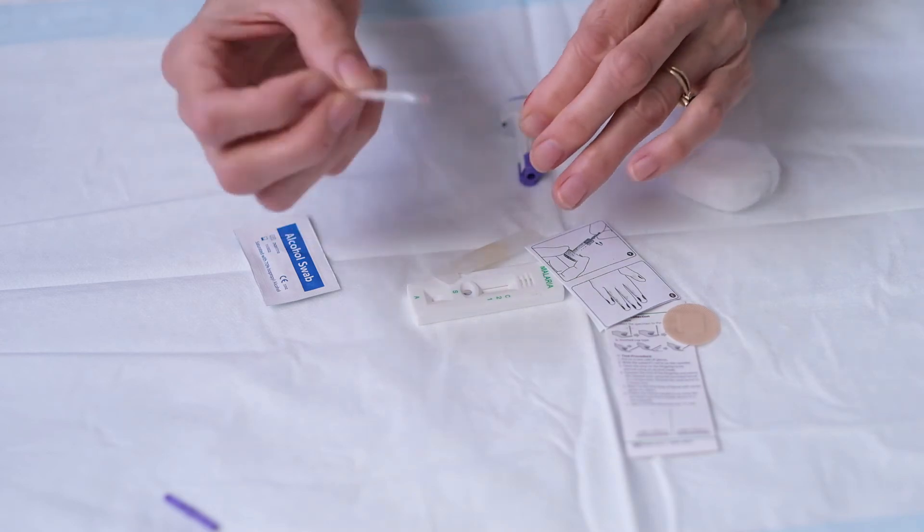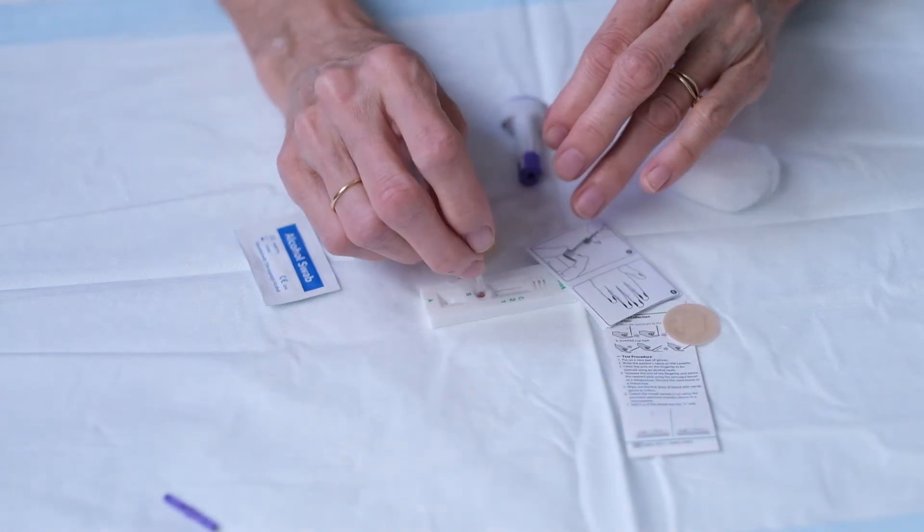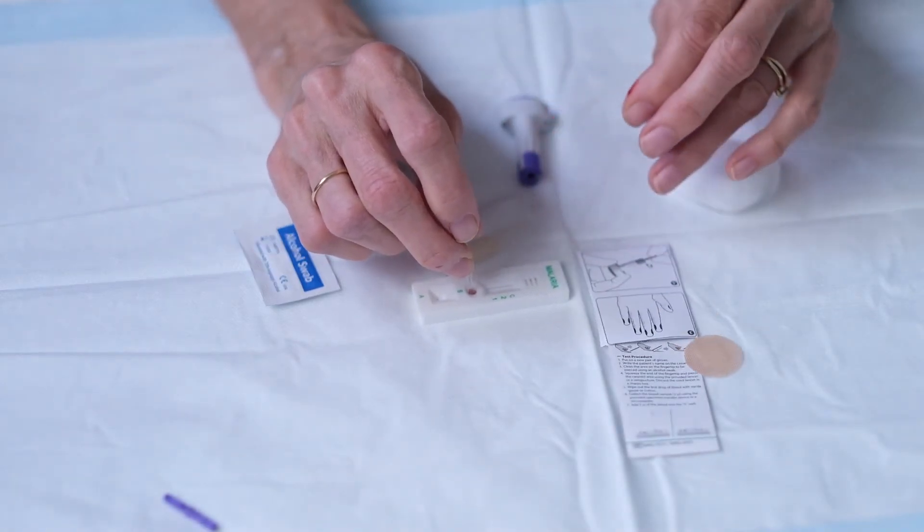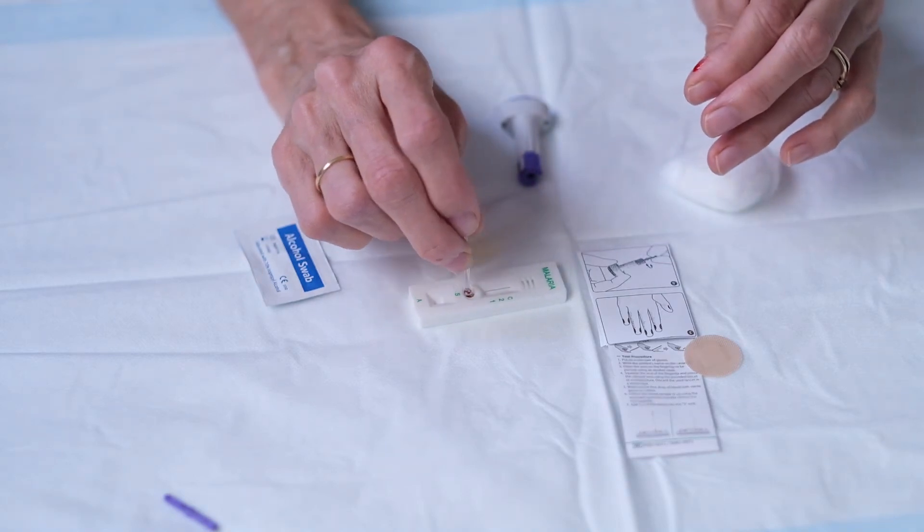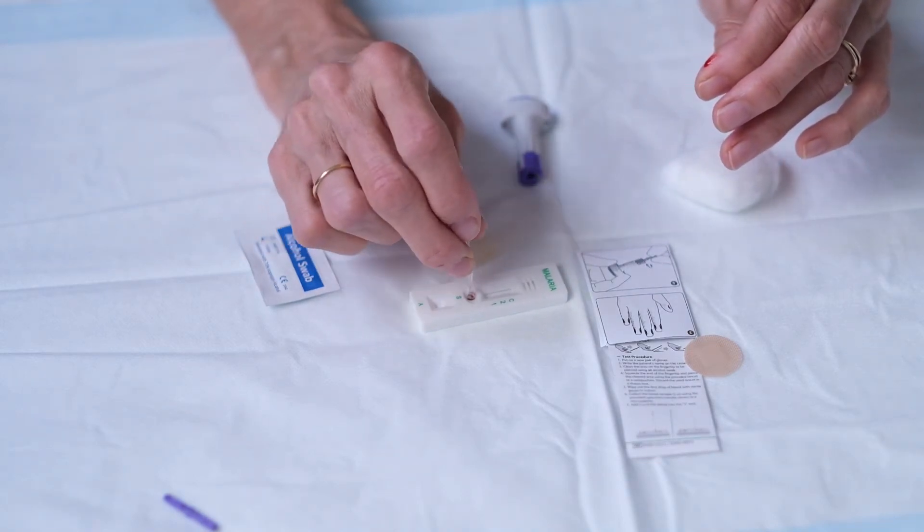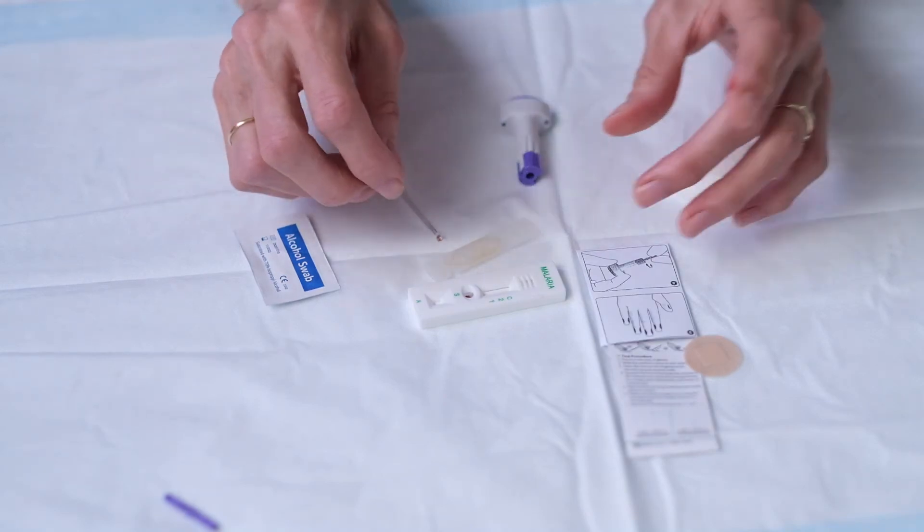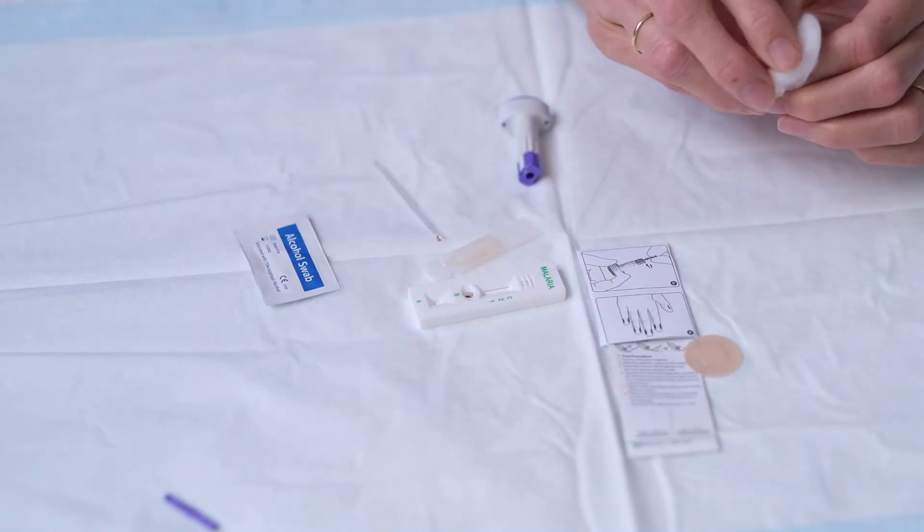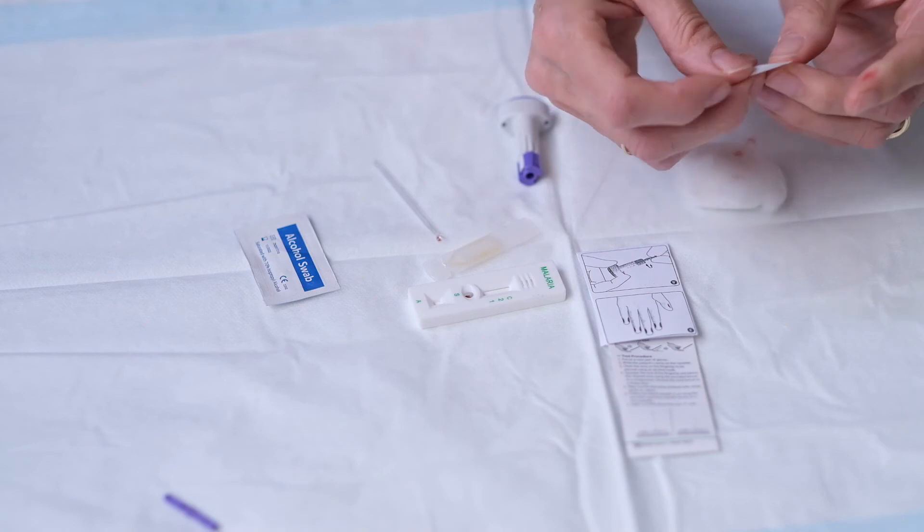So you've got the little blood in the little cup and you put it inside the round hole on your cassette. And it conveniently includes a small band-aid so that you can stop the blood getting everywhere.